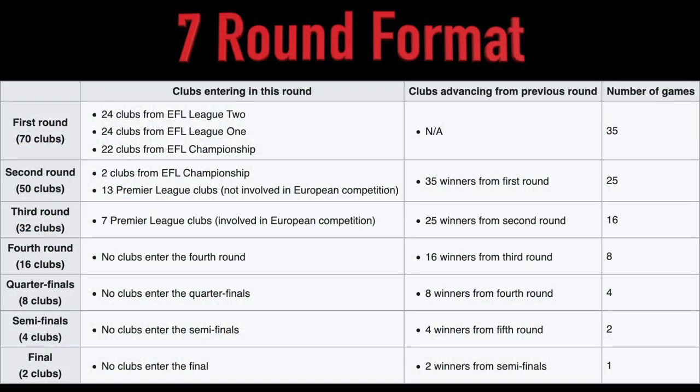Moving on to the format: it's a knockout tournament for 92 teams. Just like the FA Cup, the League Cup is formatted so that the better teams receive a competitive advantage by entering the event at later times. For our seven rounds, 70 of the 92 teams play in the first round — that's all the clubs from EFL Leagues 1 and 2 and most of the EFL Championship teams. In round 2, we add the last couple of Championship teams along with 13 Premier League squads, and by round 3, we add the remaining Premier League teams — the ones in European competition. It's set up like this to give the better teams an advantage, similar to how in the NFL, the best playoff teams receive a bye and don't have to play as many games as the wildcard teams.